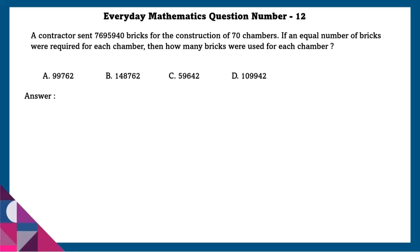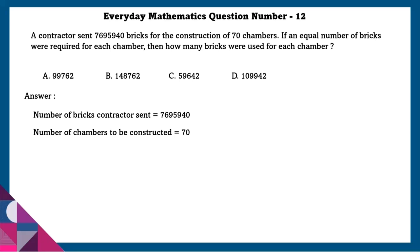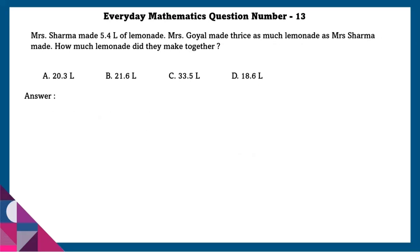Question 12: A contractor sent 76 lakh 95,940 bricks for the construction of 70 chambers. If an equal number of bricks were required for each chamber, how many bricks were used for each chamber? Number of bricks sent is 76,95,940. Number of chambers is 70. Dividing total bricks by number of chambers, the answer is 1 lakh 9,942 bricks per chamber.